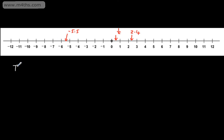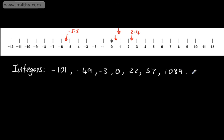Let's go ahead and just list a few out. For integers, I could have negative 101, negative 49, negative 3. We've already seen that we can include 0, we might have 22, 57, 1089. All of these are examples of integers.